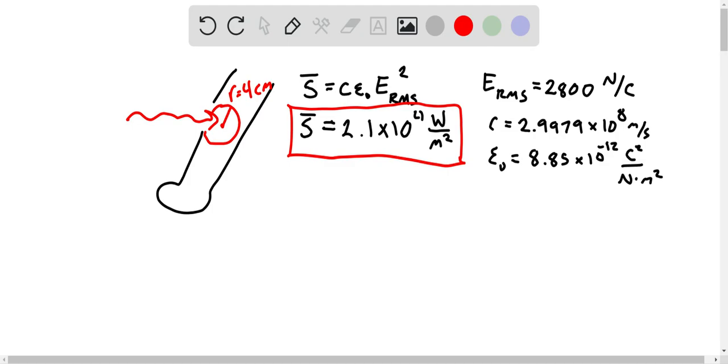Now in part two, we're looking at this radiation focused on the person's leg, and what's the average power that's being delivered to the leg? So now we're looking at average power. That's equal to the average intensity times the area over which that's being spread out. So we know that the area of a circle is just pi R squared.